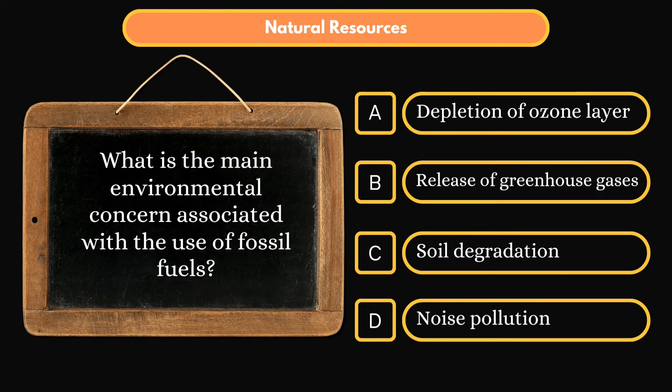What is the main environmental concern associated with the use of fossil fuels? Option A: Depletion of Ozone Layer. Option B: Release of Greenhouse Gases. Option C: Soil Degradation. Option D: Noise Pollution. Correct answer is Option B: Release of Greenhouse Gases.